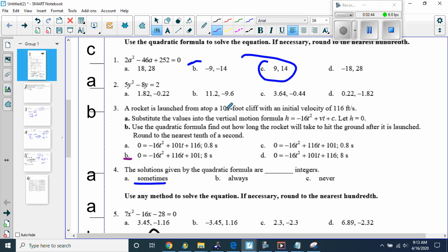This rocket launch question, rocket is launched from a top of a 101-foot cliff. Initial velocity is this. Substitute the values to the vertical motion formula. So, V is this here. C is the height, which is the 101-foot cliff. So, you put this 101 and this 116 into your vertical motion formula, which will get you this formula here.